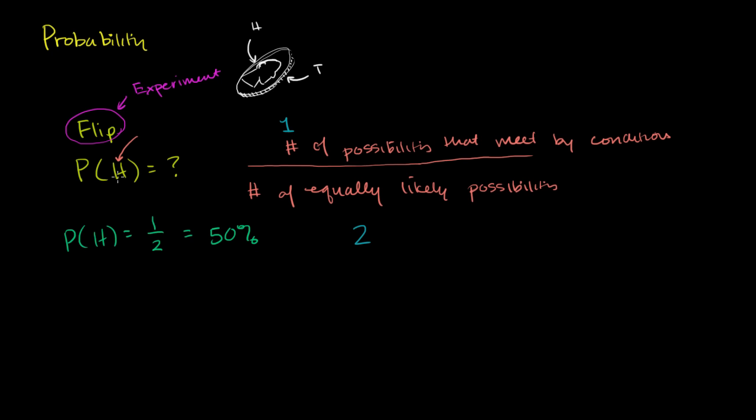And so another way to think about this 50% probability of getting heads is if I were to run this experiment tons of times, if I were to run this forever or an infinite number of times, what percentage of those would be heads? You would get this 50%. And you can run that simulation. You can flip a coin, and it's actually a fun thing to do. I encourage you to do it.